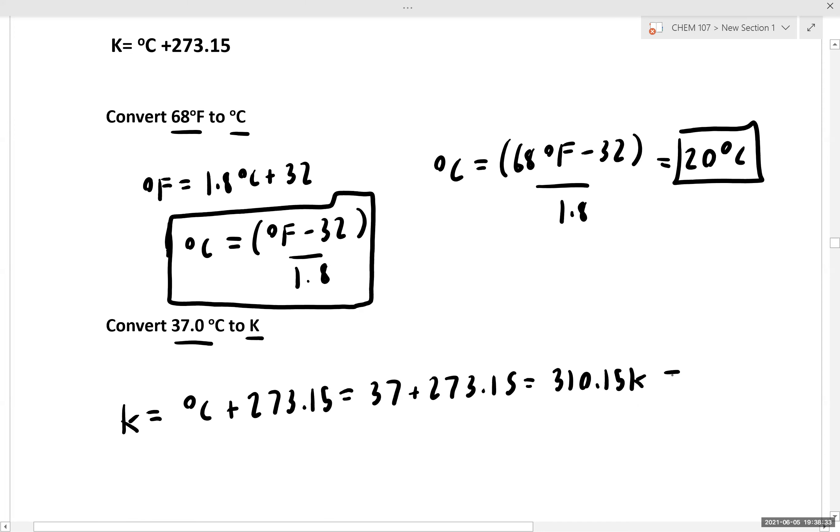And if we're rounding this to the proper number of sig figs, we'd write this as 310.2 Kelvin to reflect the fact that our input value has just one decimal place.